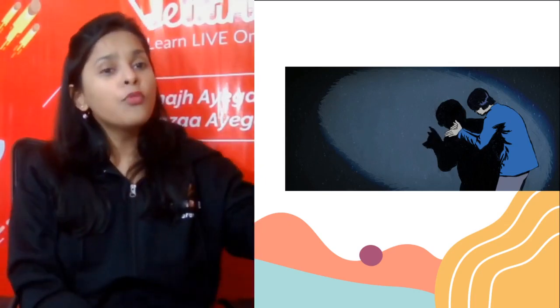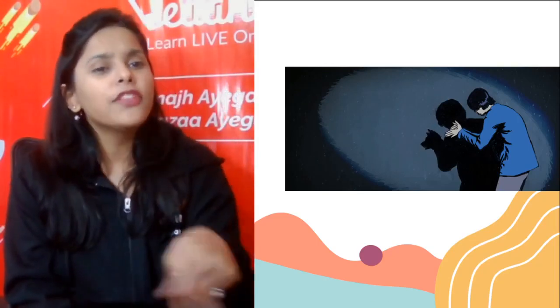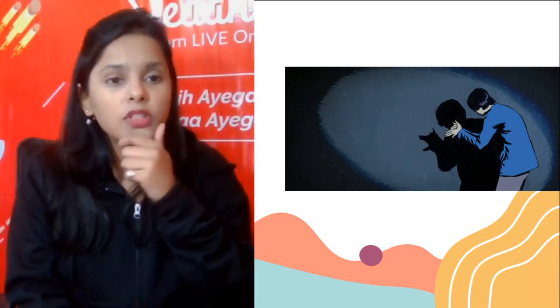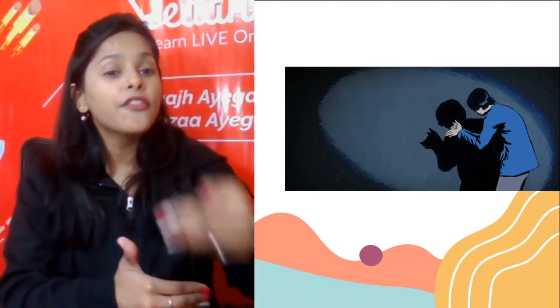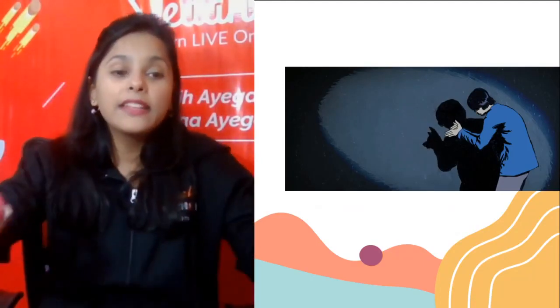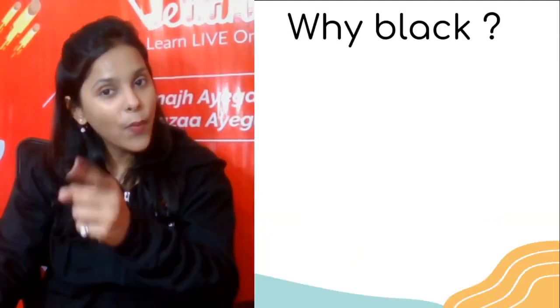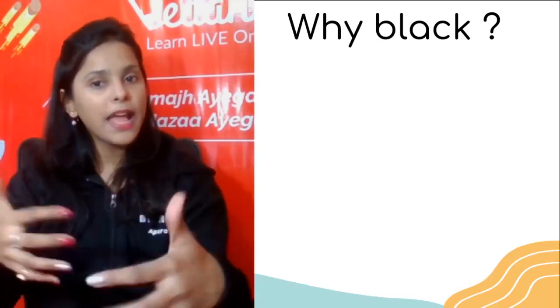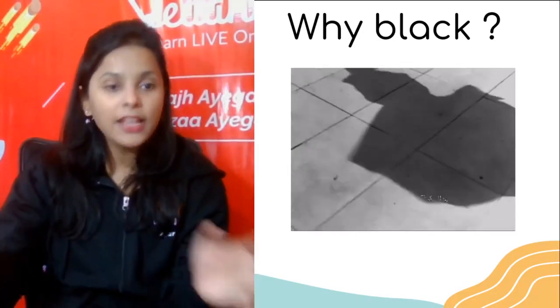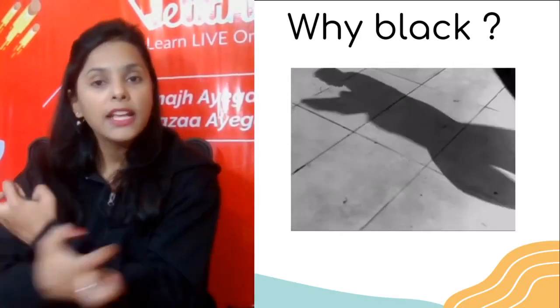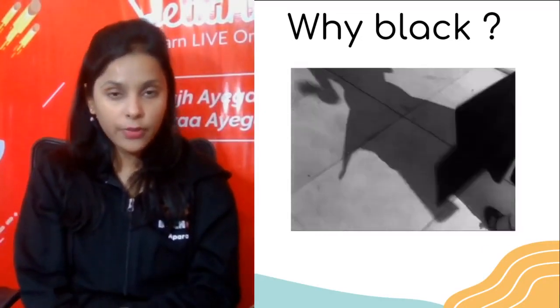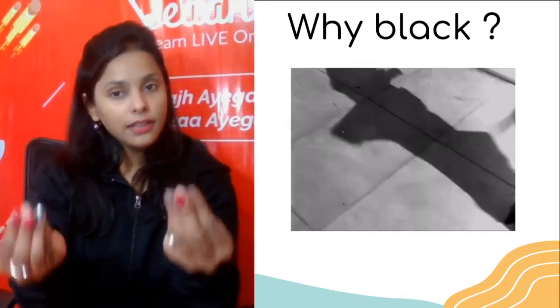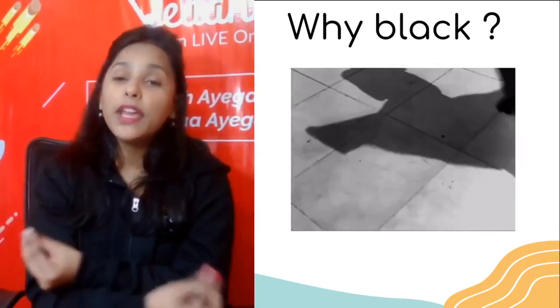Now we will understand what a shadow actually looks like and why it is black. Shadows most often appear black because visible light cannot make its way past the obstruction. If there is no light falling on the area, then it will appear black — there is no light to reflect. Shadows are very rarely completely black, as there are usually reflections from surfaces and other light sources which make their way onto the shadowed area. Black is the absence of light, and it absorbs every other frequency. That is the reason shadows appear black.